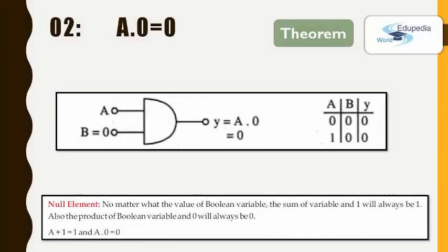The second law says, A dot 0 equals 0. This means, for an AND gate, if one input is 0, the output would always be 0. We call this law, the null element law. No matter what the value of Boolean variable is, the product of Boolean variable and 0 will always be 0. The correctness of this law can be seen in the truth table.